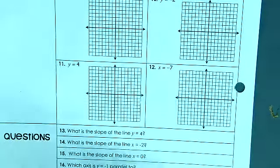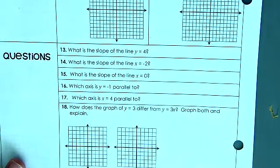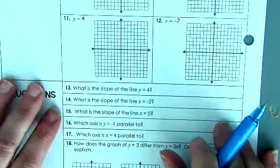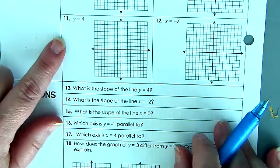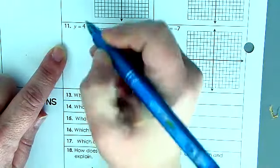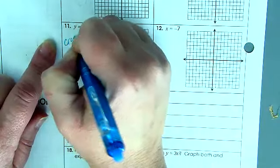And now we jump down and we're going to look at a couple of questions down here. It says, what is the slope of the line y equals 4? Well, that's going to be similar to this number 11 right here. So let's go ahead and we'll graph this one as well. It says y equals 4, so that means it crosses the y-axis.